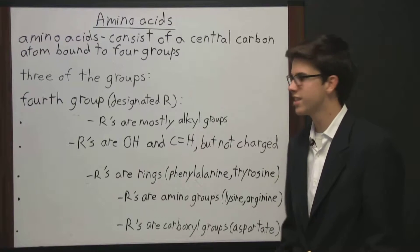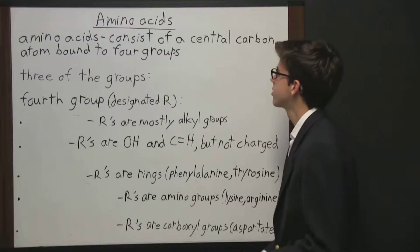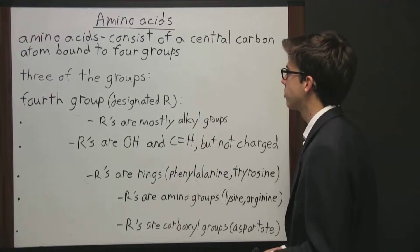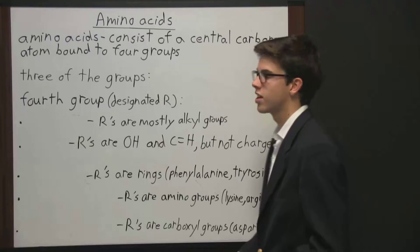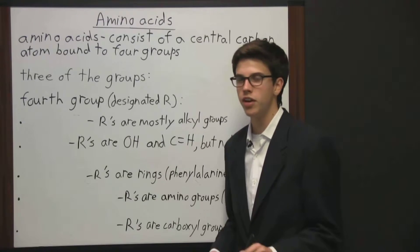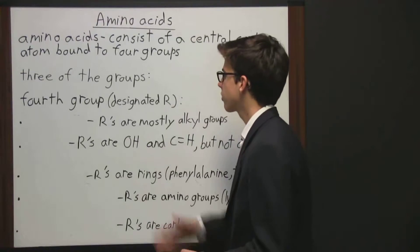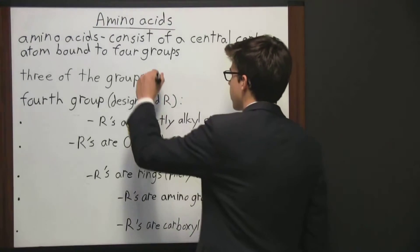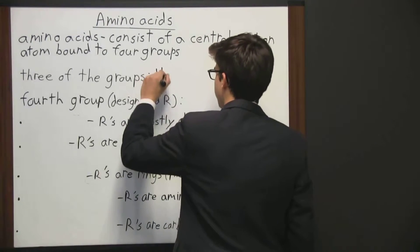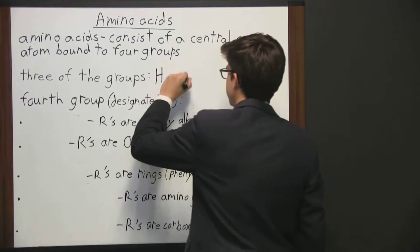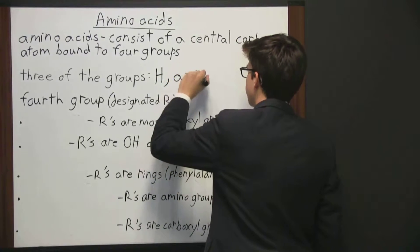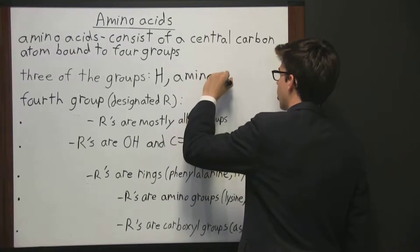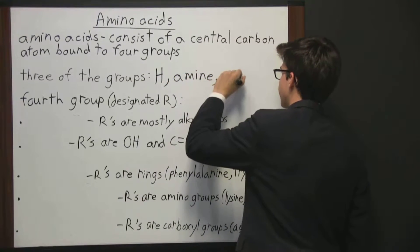Amino acids consist of a central carbon atom bound to four groups. In every amino acid, three of those groups are always going to be the same: they're going to be made up of hydrogen, amine, and a carboxylic acid.